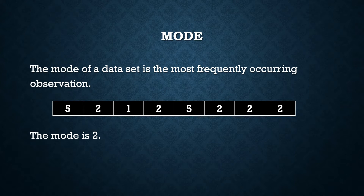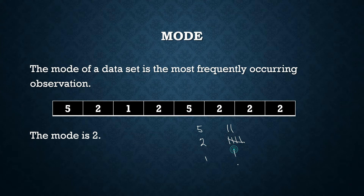If you have a large data set and must find the mode manually, you can make a tally. For five, you have one. For two, you count: one, two, three, four, five. For one, you only have one. So here the mode is two.